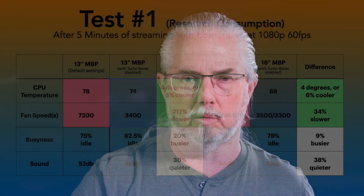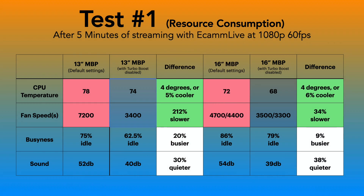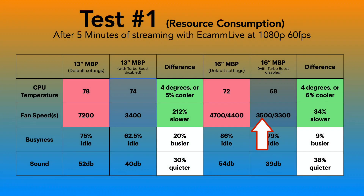For the top-of-the-line MacBook Pro, the results are similar. The processor temperature jumped to 72 degrees Celsius, the left-side fan hit 4,700 RPM, and the right-side fan hit 4,400 RPM. The machine was 86% idle — only 14% busy — but was still making 54 decibels of fan noise. When we enabled Turbo Boost Switcher on the 16-inch MacBook Pro, the temperature dropped by four degrees Celsius, the fans ran 34% slower at 3,500 RPM on the left and 3,300 RPM on the right — making it 38% quieter. The load got shared across the eight cores and the machine was still basically 80% idle.